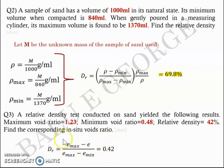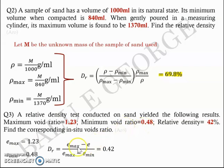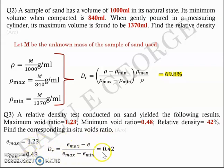e_max, the maximum void ratio, is given as 1.23, and minimum void ratio e_min is given as 0.48. The only unknown turns out to be e, the in-situ void ratio. Substituting e_max and e_min into this equation and solving, you get a value of around 0.915.